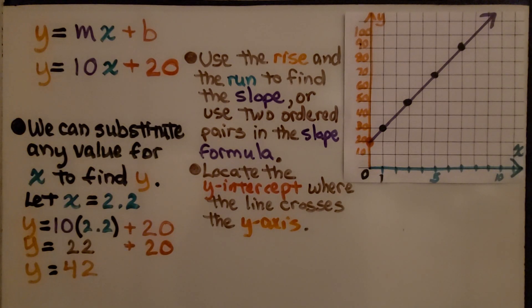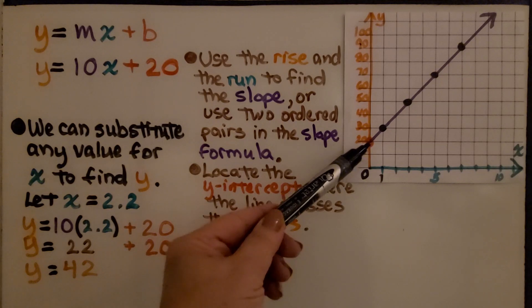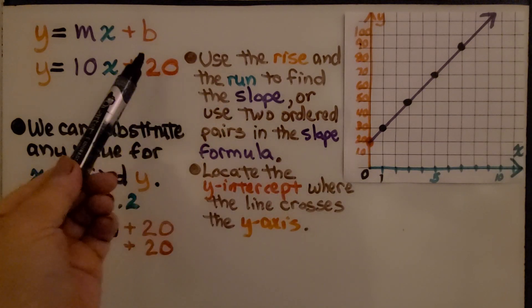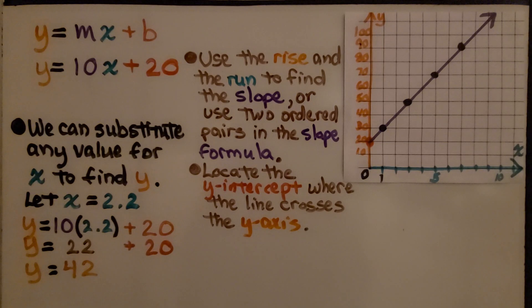We can also just look at the graph and see that it goes through 20 on the y-axis. That's our b value, our y-intercept b. We just substitute any value for x to find y. If we let x equal 2.2, we substitute that into our equation and we know that y is equal to 42.